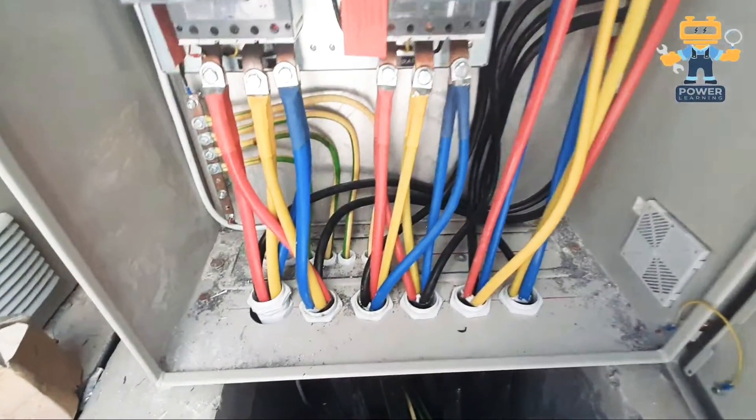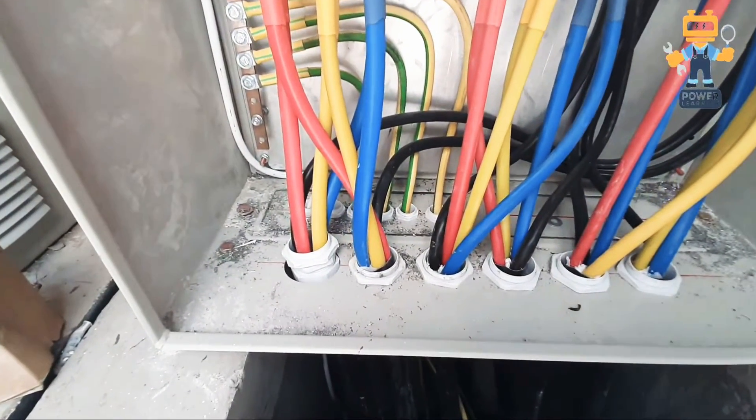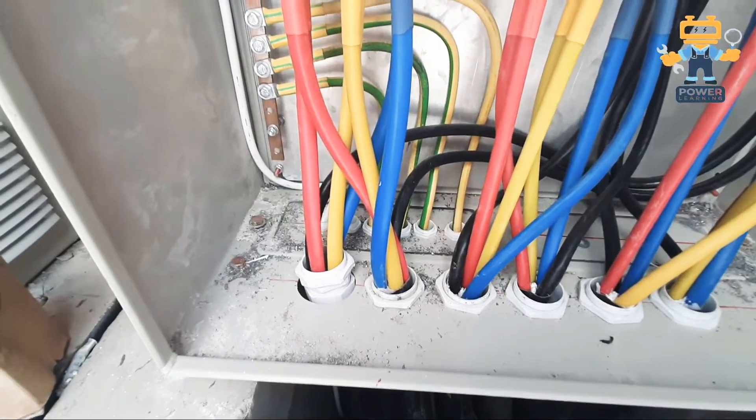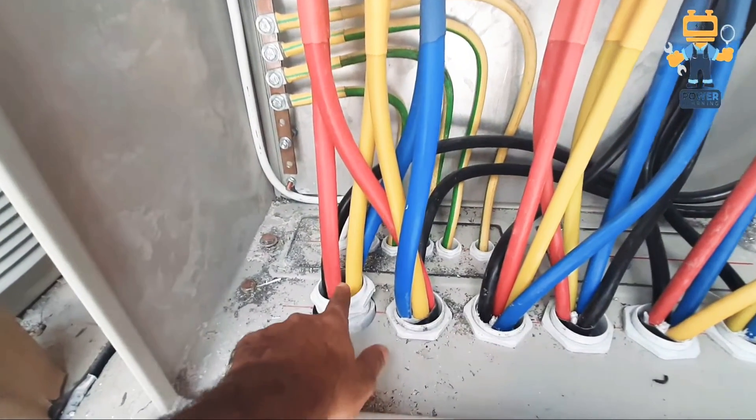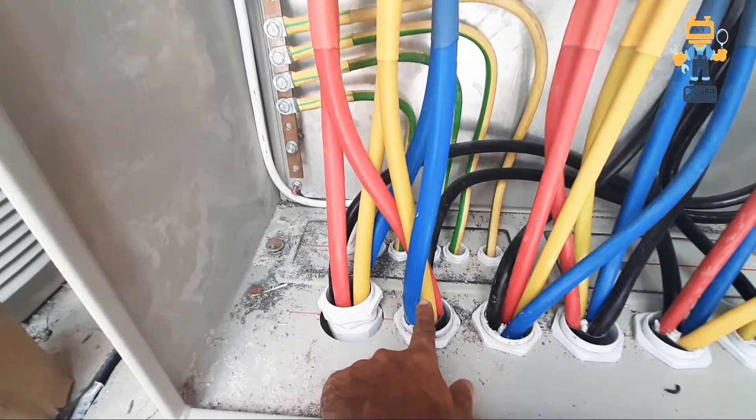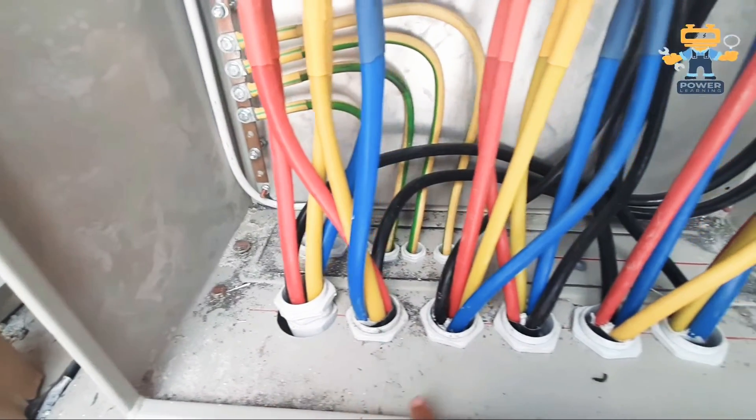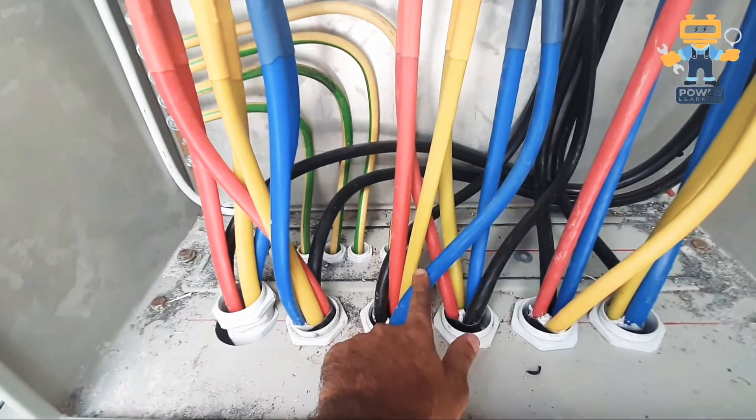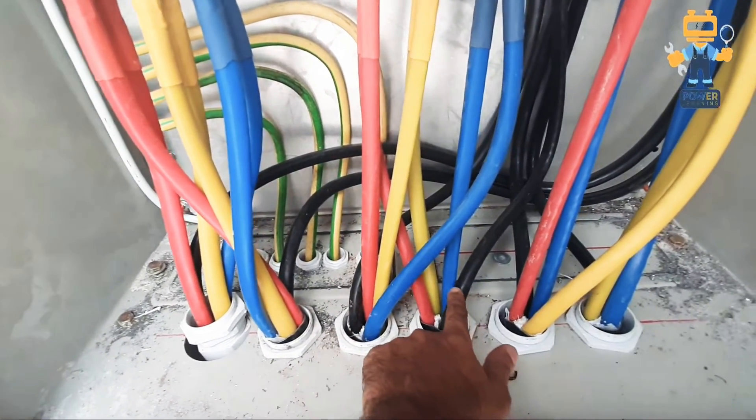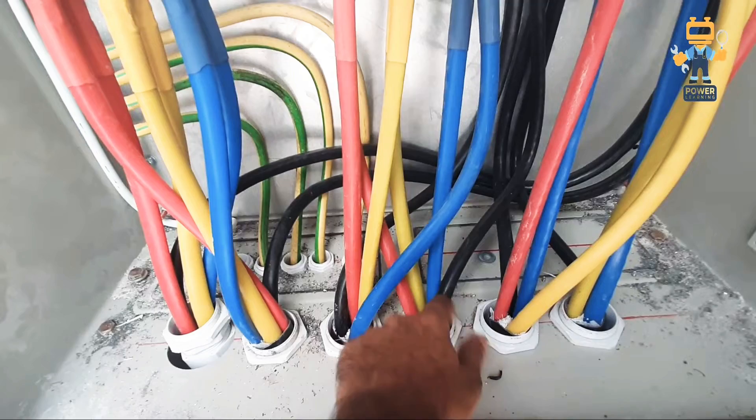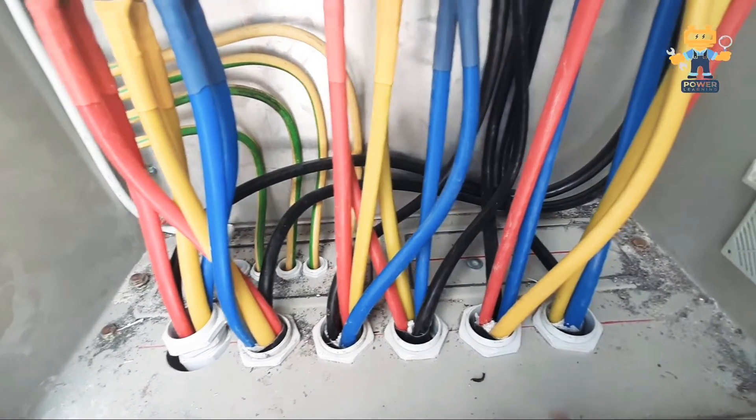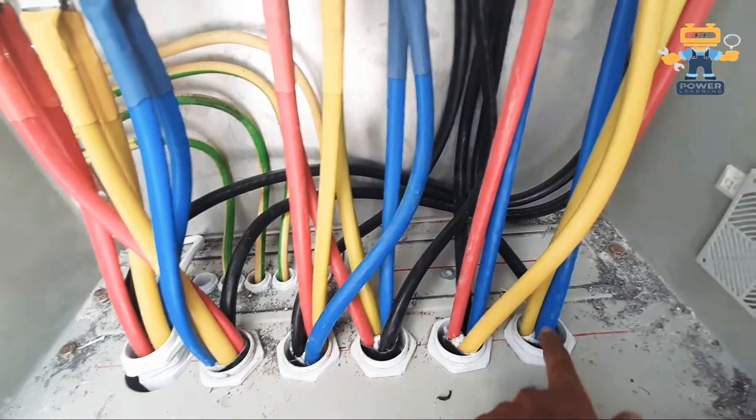So guys, let us see here. This is our two incomer cables, number one and number two. These two are our incomer cables from our transformer, and this is number one and number two coming from our generator. After that, this number one and number two are going to our load.